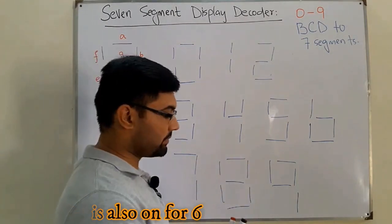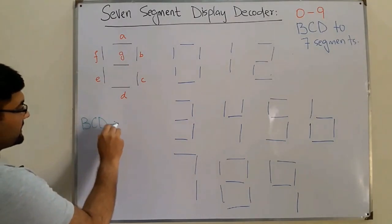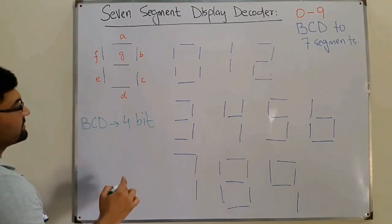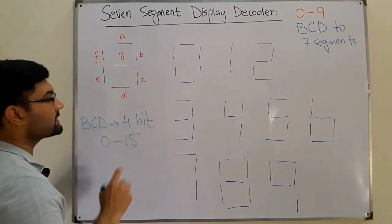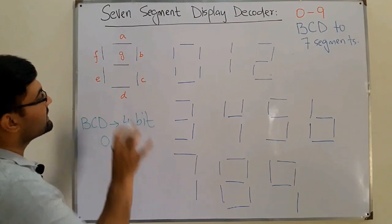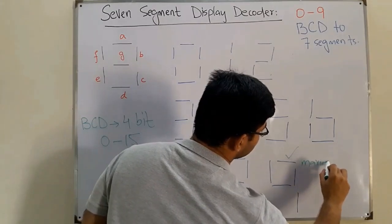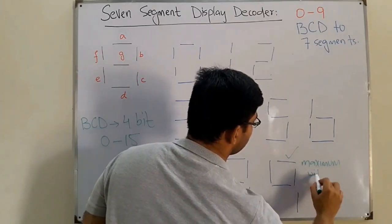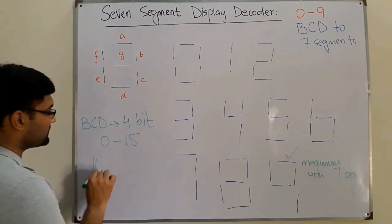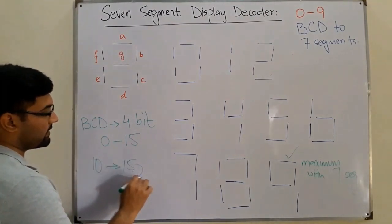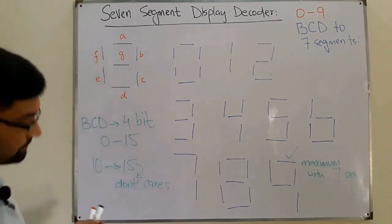BCD is a four-bit number, so we can represent up to 16 values (zero to fifteen). However, the maximum number we can display on the seven segment display is nine. This means BCD values from ten to fifteen are don't cares.